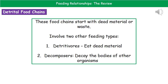There is another type called a detrital food chain. These food chains start with dead material or waste and involve two other feeding types. Detritivores eat dead material. Decomposers decay the bodies of other organisms — be careful not to say that decomposers eat the bodies of other organisms, because they don't. They just decay the bodies of other organisms.